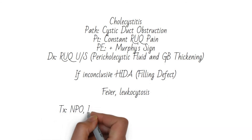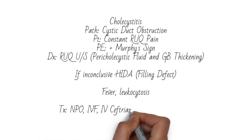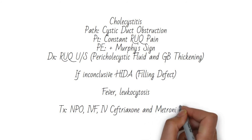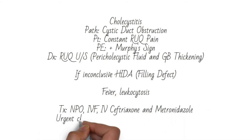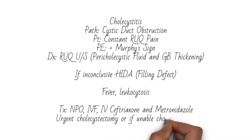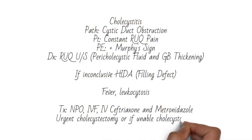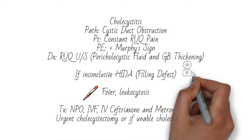To treat, make the patient NPO, give IV fluids, and begin IV antibiotics such as ceftriaxone and metronidazole for gram negatives and anaerobes. The patient should undergo cholecystectomy urgently. If the patient is a poor surgical candidate, cholecystostomy may be performed.